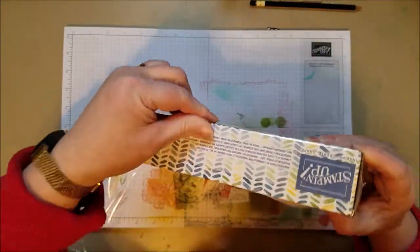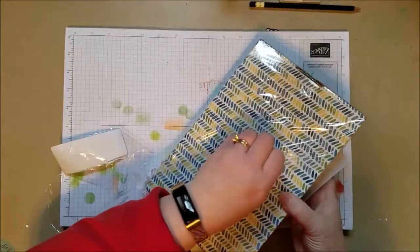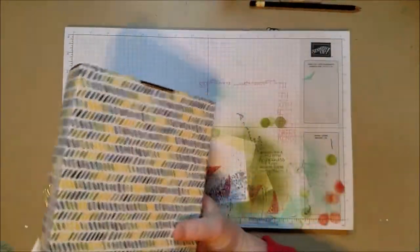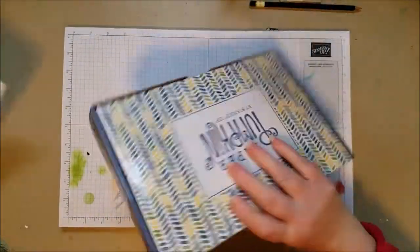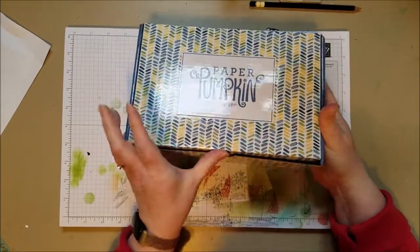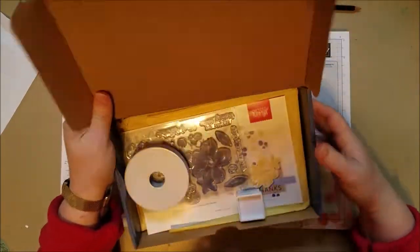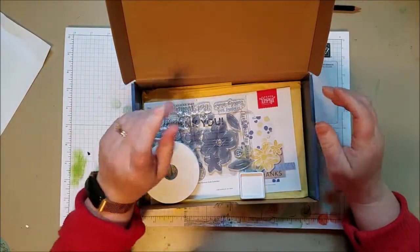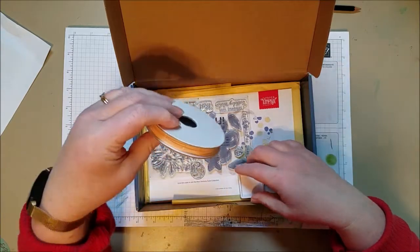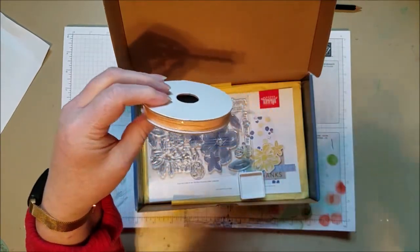The box is super cute, isn't it? Okay, this is the March Paper Pumpkin kit, which always has two stamp sets. Well, not always, but it has for quite a while because it's kind of an anniversary box. So I'm going to show you two stamp sets today.